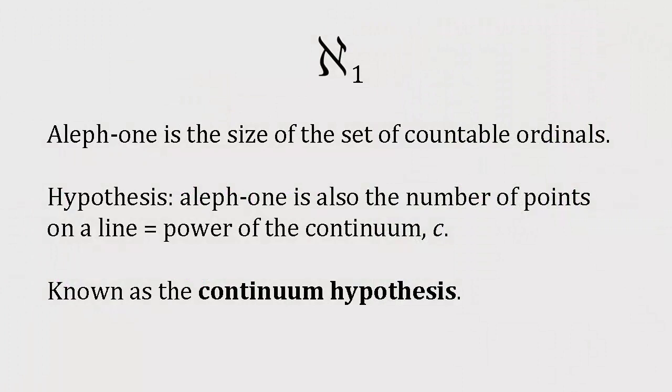We've said that Aleph 1 is the size of the set of countable ordinals, but does it have any other interpretation? Aleph Null measures the size of the set of all natural numbers. Does Aleph 1 also correspond with anything that's familiar and conceptually easy to grasp? Cantor thought so. He believed that Aleph 1 was identical with the total number of points on a mathematical line, which, astonishingly, he found was the same as the number of points on a plane or in any higher n-dimensional space.